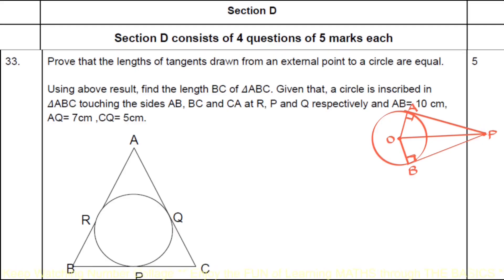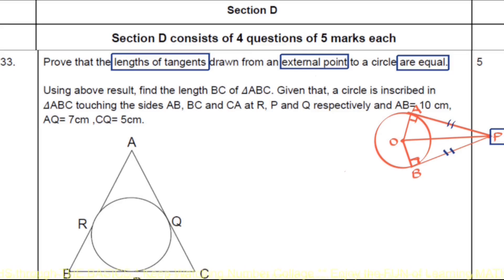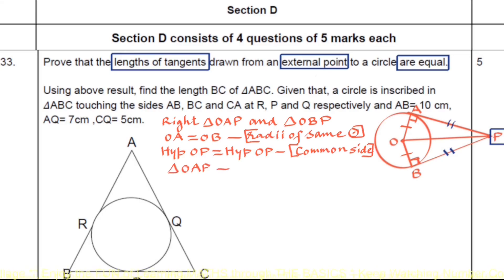We have to prove that lengths of tangents drawn from an external point to a circle are equal. P is the external point. AP and BP are tangents drawn to the circle with center O. After joining center O with points of contact A and B, we get two right triangles, triangle OAP and triangle OBP, in which OA equals OB (radii of same circle) and hypotenuse OP equals OP (common side). By RHS congruence, triangle OAP is congruent to triangle OBP, so tangent segment AP equals tangent segment BP. Hence proved.